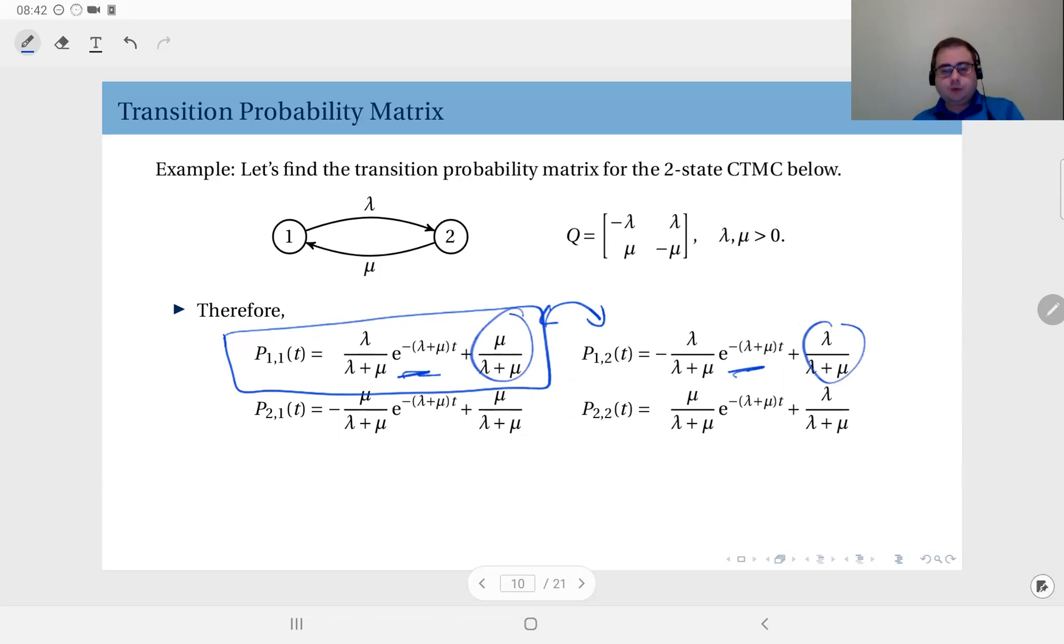And furthermore, remember to find P22, I was to swap the roles of mu and lambda so that I can write directly from here, that would be mu divided by lambda plus mu times the exponential term plus lambda divided by lambda plus mu. And finally, from this, you can find P21 by subtracting this from one. So this gives you the entire set of transition probabilities within time t.